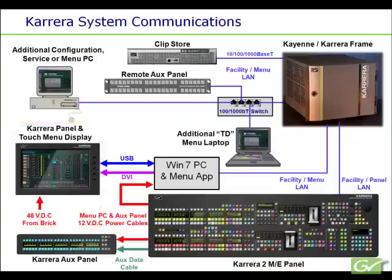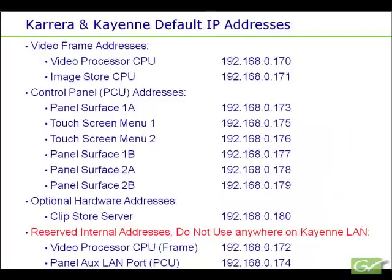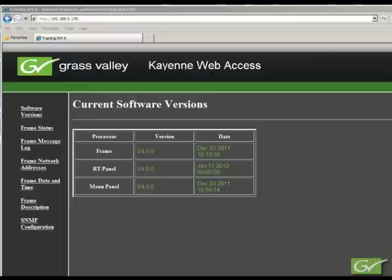The Cayenne and Carrera systems are set up to use default IP addresses in the factory. If the system is installed with these IP addresses, all items should connect and operate without the need for further changes. If menus or panels do not connect, or if different IP addresses are required, they can be checked or changed as follows. First, we'll check or set the frame IP address numbers.